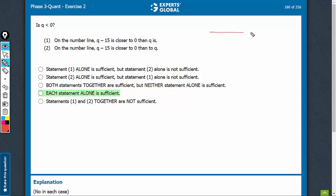Is q less than 0? This is the number line. We realize here, statement 1: q minus 15 is closer to 0 than q is.